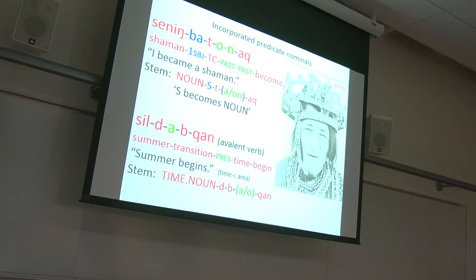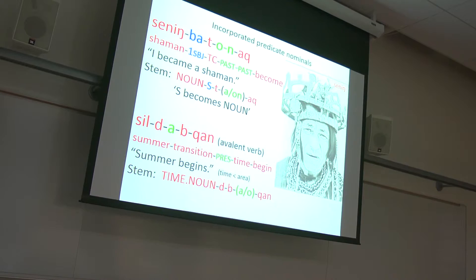Position seven also allows the incorporation of what we would call in another language predicate nominals. In Ket, you can have a word that means 'I became a shaman' — essentially 'I shaman became' — with an incorporated noun. There are a few verb bases that allow this type of incorporation.